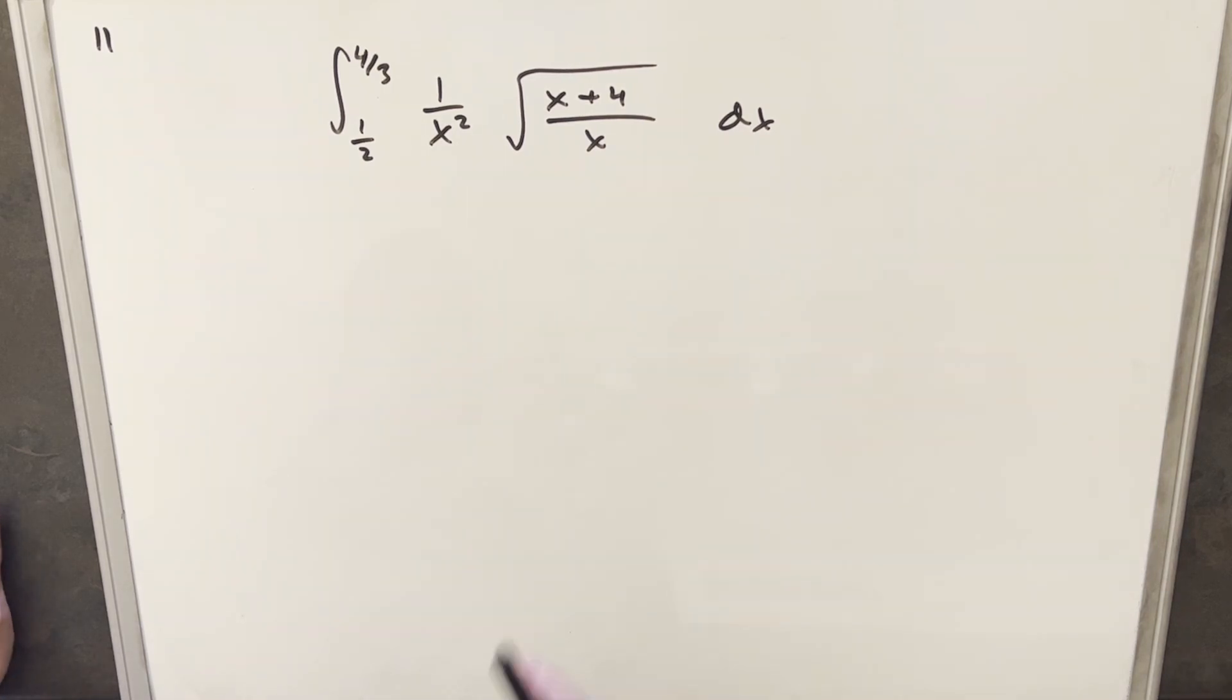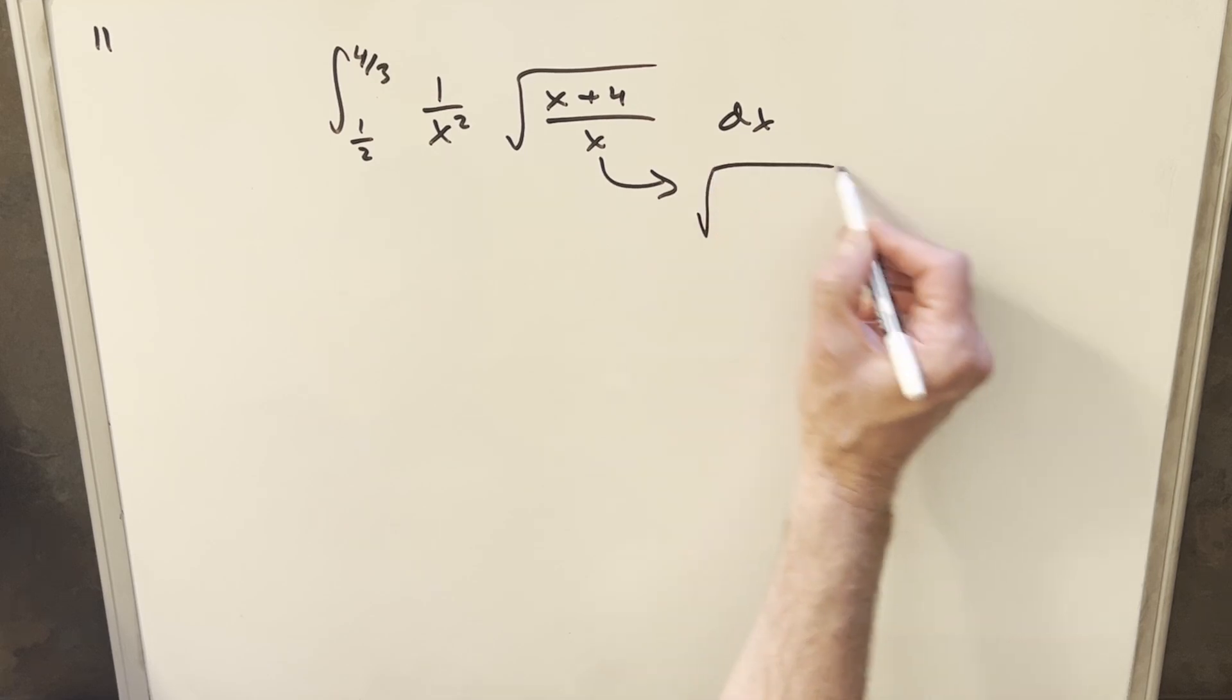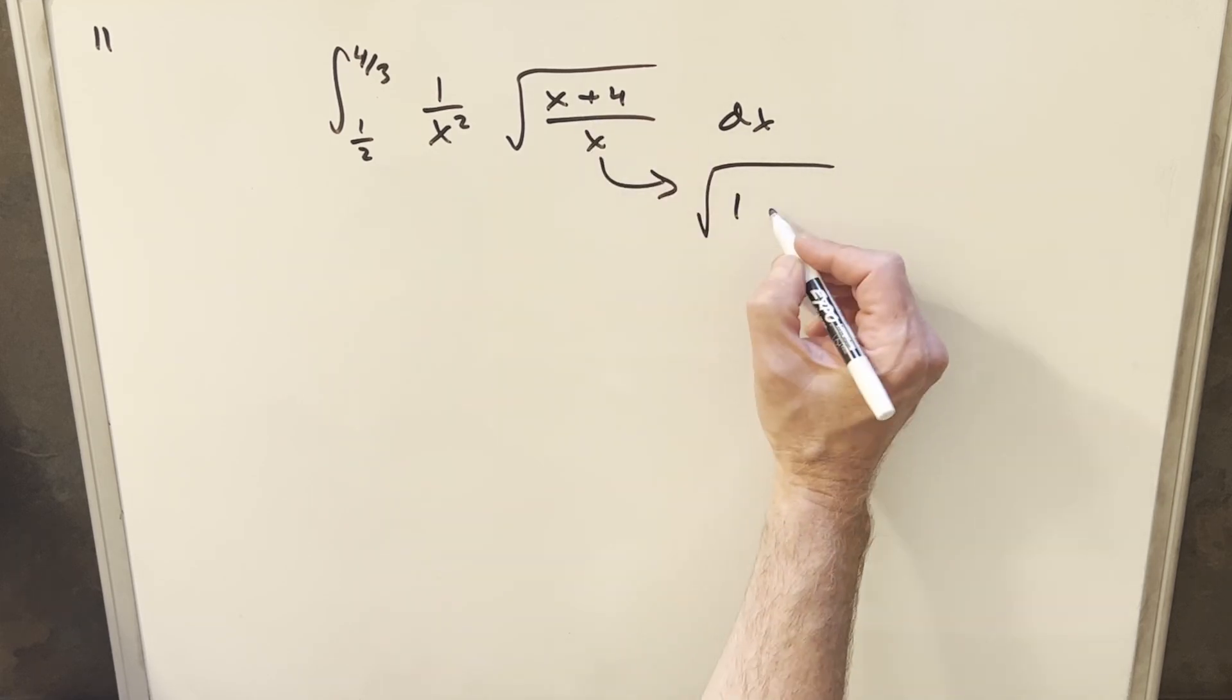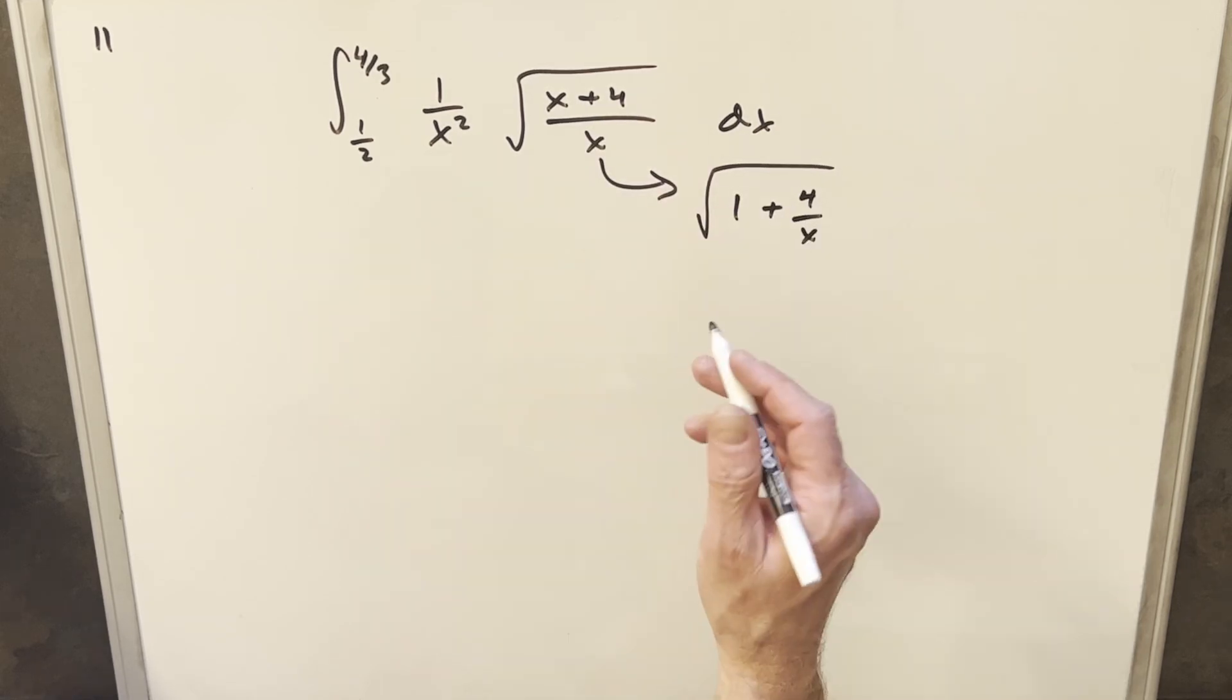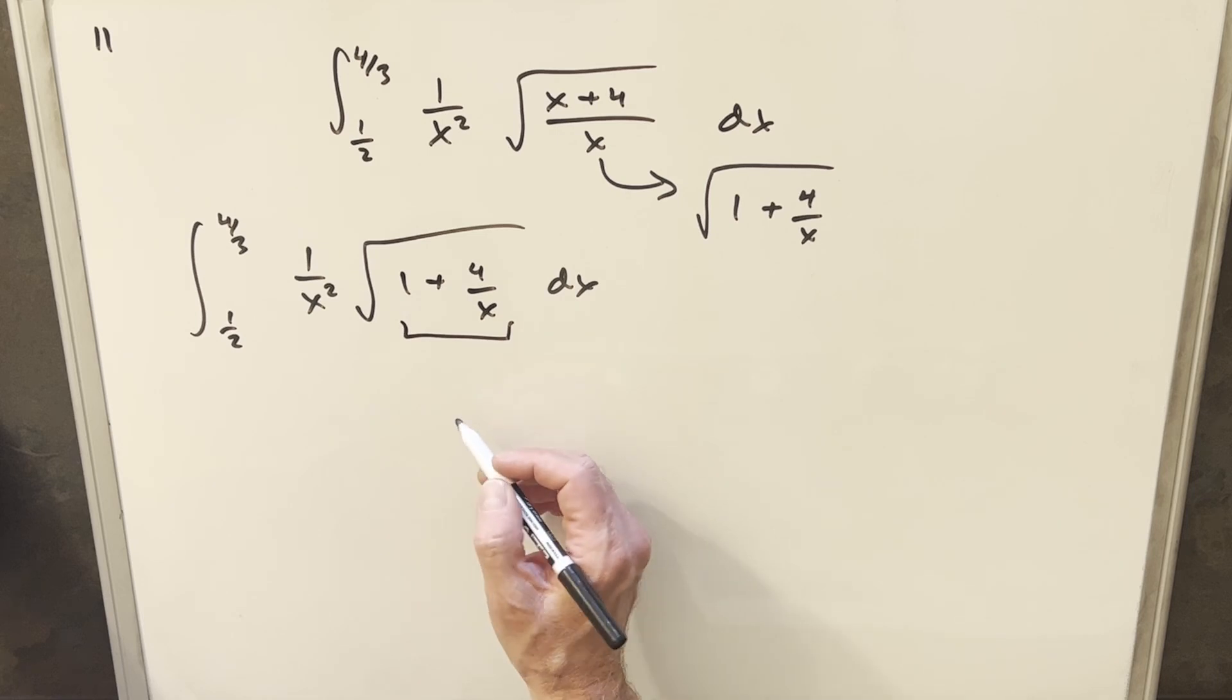My first thought is this looks a little tricky with the radical like this. I was playing with the algebra. Now what I want to do is I think I want to rewrite this inside the radical here. Let's rewrite this as just dividing in the x. We'll rewrite it as 1 over, we'll write it as 1 plus 4 over x. I don't think we necessarily need to do this, but I think what happens is it makes a u substitution more apparent.